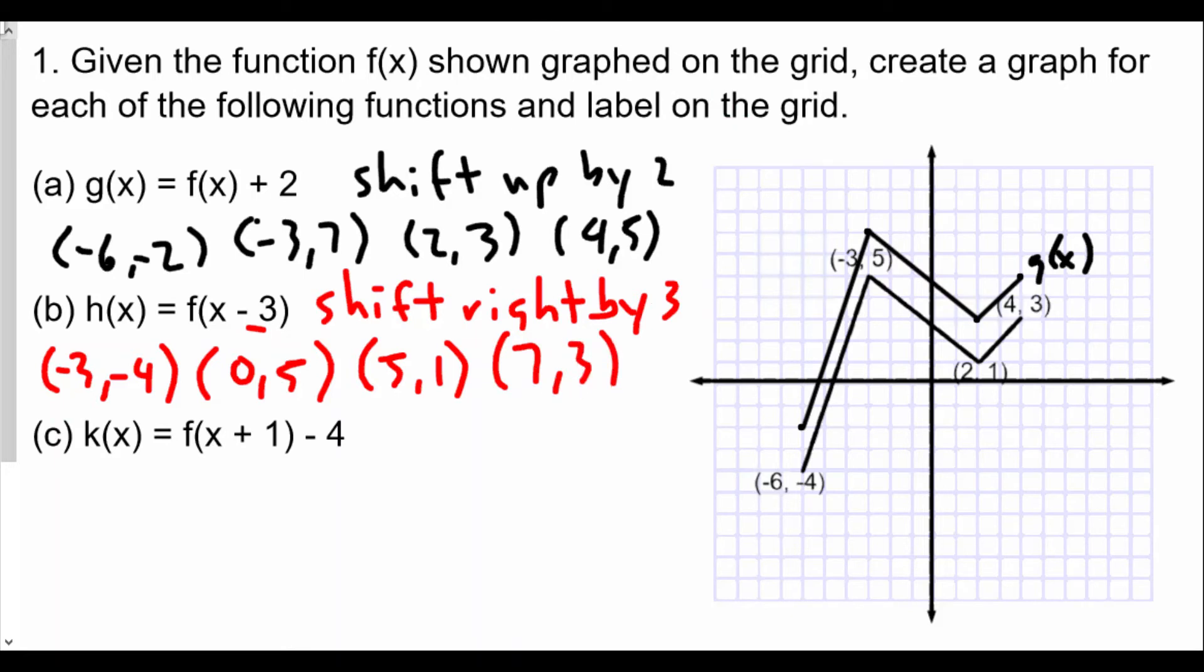And so now we're going to plot those points. So to the right by 3, we have -3, -4, this point here. -3, 5 becomes 0, 5, that point there. 2, 1 becomes 5, 1, this point here. And 4, 3 becomes 7, 3, this point here.